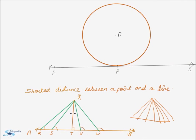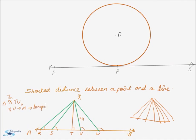If we pick up a pair of these distances, say XT and XU, then XTU will become a right triangle, and XU will become the hypotenuse. Since the hypotenuse is the longest side in a right triangle, we can say that in triangle XTU, XU is the hypotenuse and therefore the longest side, which implies XU is greater than XT.